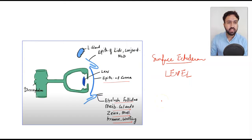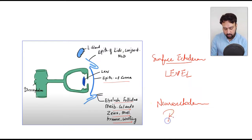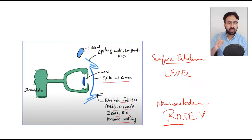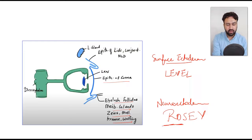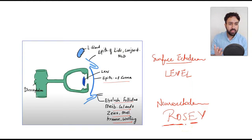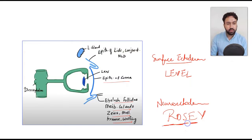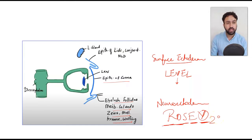The green structures in the diagram are derivatives of the neuroectoderm — remember the mnemonic ROSEV. You've got the retina and the optic nerve; the retina has the neurosensory retina and the RPE. The RPE continues as the epithelium of the iris and ciliary body. The smooth muscles of the iris — sphincter pupillae and dilator pupillae — are supplied by the autonomic nervous system, so they are derived from neuroectoderm. The secondary vitreous also comes from the neuroectoderm, whereas primary and tertiary vitreous are derivatives of surface ectoderm.